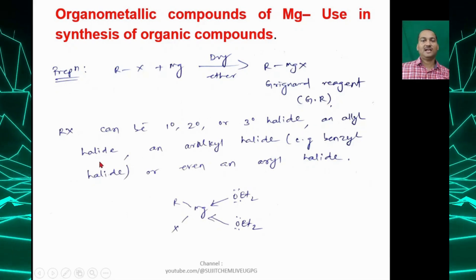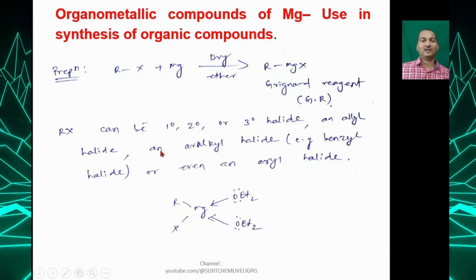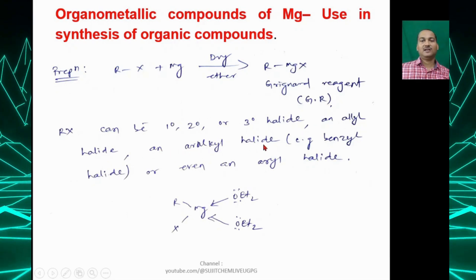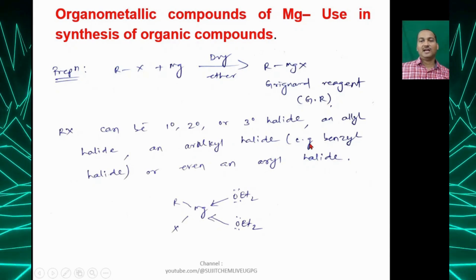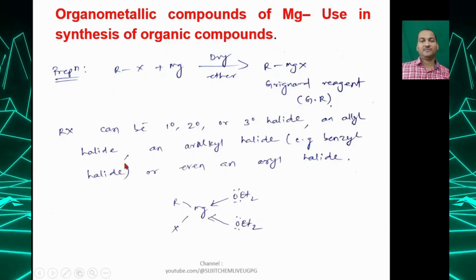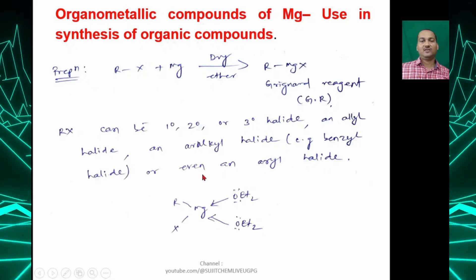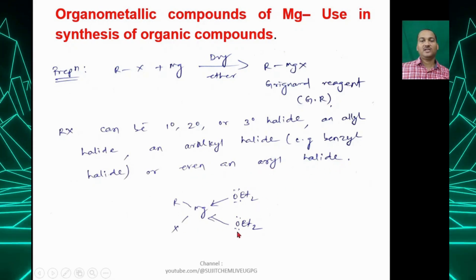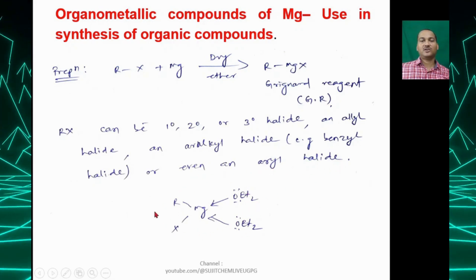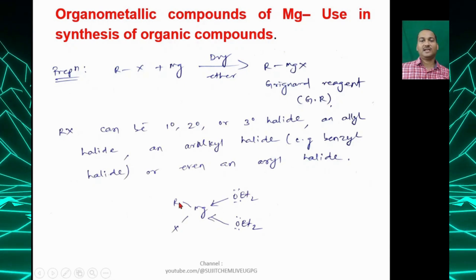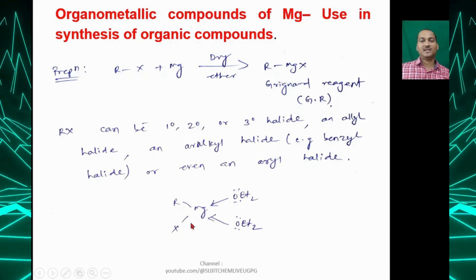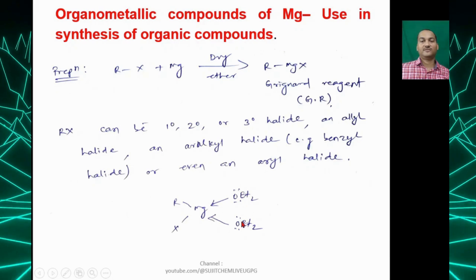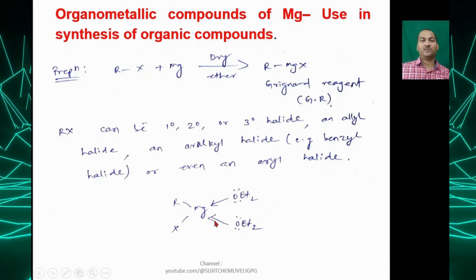RX can be a primary, secondary, or tertiary halide, an allyl halide, an aralkyl halide (benzyl halide), or even an aryl halide. The Grignard reagent RMgX has a structure coordinated to ether molecules via coordinate bonds.